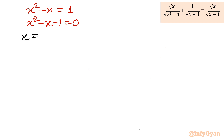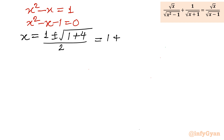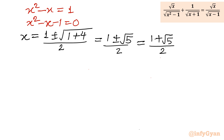Using the quadratic formula with a=1, b=-1, c=-1: x equals [1 ± square root(1 + 4)] over 2, giving x equals (1 + square root 5) over 2, or x equals (1 minus square root 5) over 2.